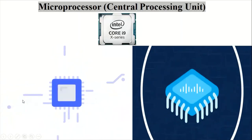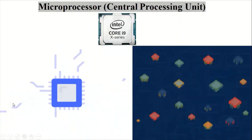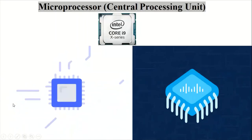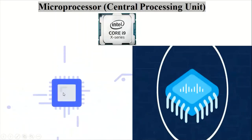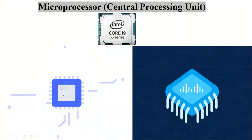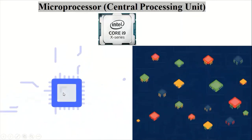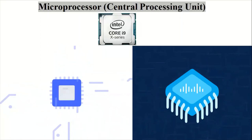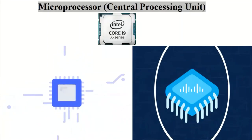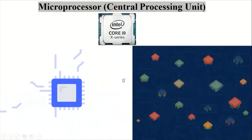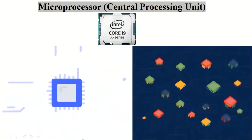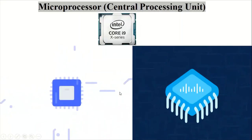We can see data coming through the data buses and address buses towards the microprocessor, which is performing different operations to produce the desired result. Data enters the microprocessor from different directions as shown in these animated pictures. On the top we can see a Core i9 microprocessor chip.